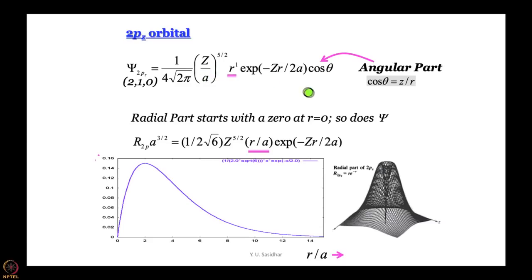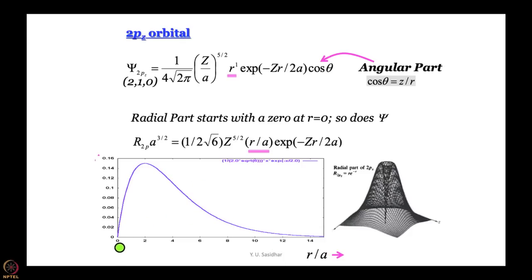Why is it called 2pz? We will learn very soon. The functional form is a constant multiplied by r to the power 1, multiplied by e to the power minus Zr over 2a. The increasing function of r multiplied by the exponential decay means it goes through a maximum. The radial part starts at 0 when r equals 0, goes up, and comes back down. The vertical axis in this 3D plot is psi — in fact, in this case it is the capital R radial function.